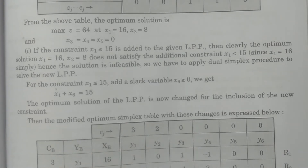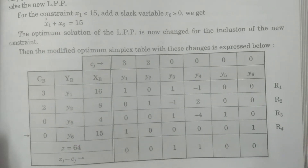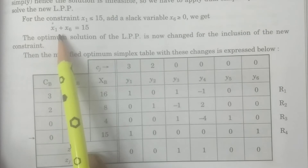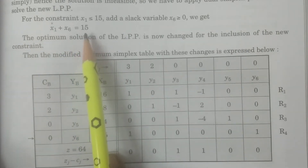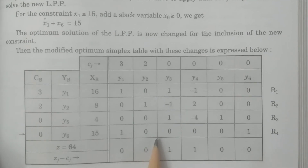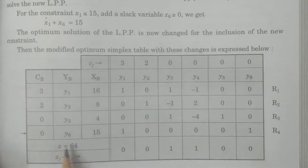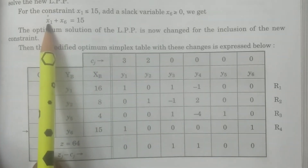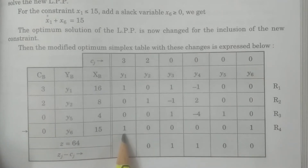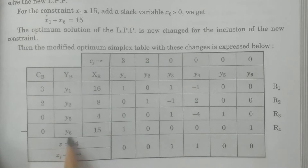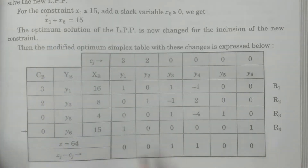Now the optimum solution is going to be changed. You have to add the constraint x1 + x6 = 15 into the simplex table. The slack variable is x6, so I am introducing vector y6. I insert the coefficient of x1 as 1, and introduce another vector y6 with coefficients 0, 0, 0, 1 in the last row — since the slack variable directly produces a basis vector y6.